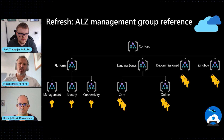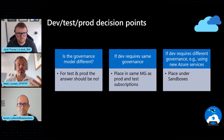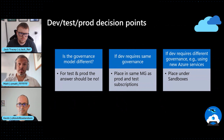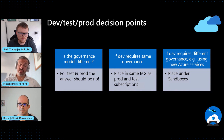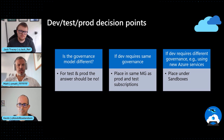If we then fast forward to making decisions about where an application subscription would live — let's say you've got an application with three subscriptions: dev, test, and prod — where is that going to live? Where do we put that? That's a good question.